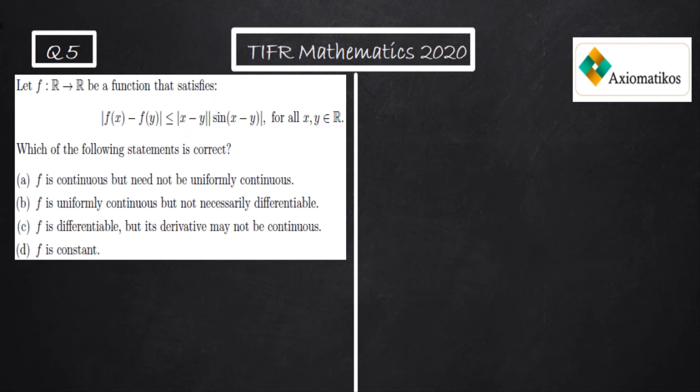So now we can conclude that for all a belongs to R, f is differentiable at x equal to a, and f'(a) is 0. So it implies that f'(x) = 0 for all x belongs to R.